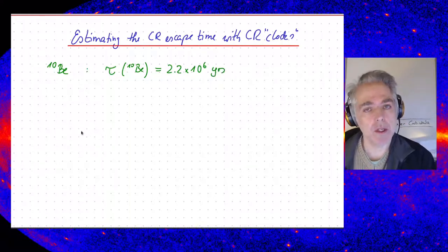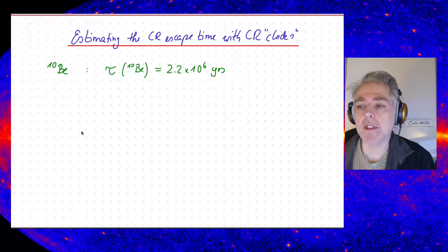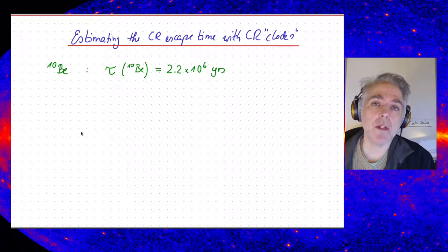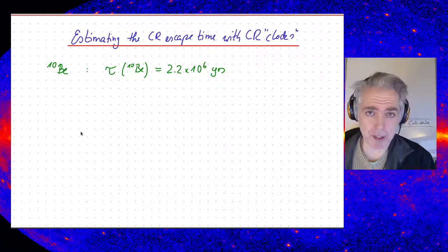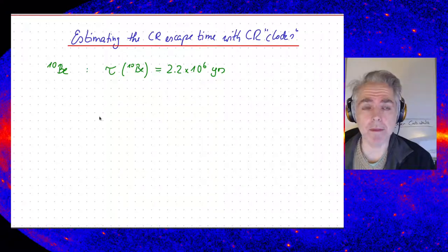So this is not too short. In that case, cosmic rays would basically be gone if the residence time is more than 10 to the 6 years, and we have good reason to believe so. Because if you remember, we estimated a number for the path length in the one-slab model, and we found this to be of the order of megaparsecs — so at least millions of years. So beryllium-10 seems to be good for this job.